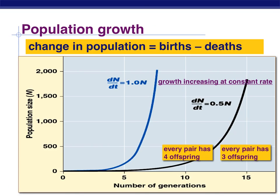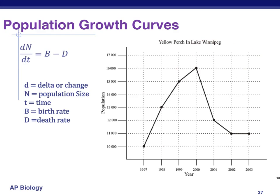Population growth can be calculated. It is simply the change in your population, measured by looking at the number of births in that population minus the number of deaths. A graph like this indicates a growth curve, and the formula is: change in population size (delta N) divided by change in time (delta T) equals birth rate minus death rate — how many births versus how many deaths.